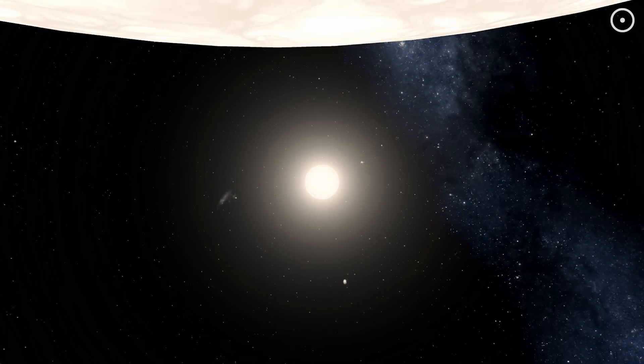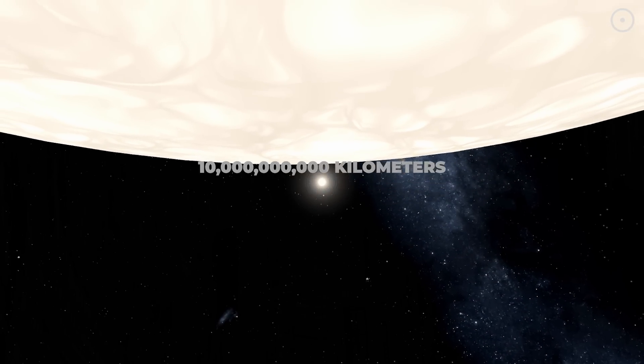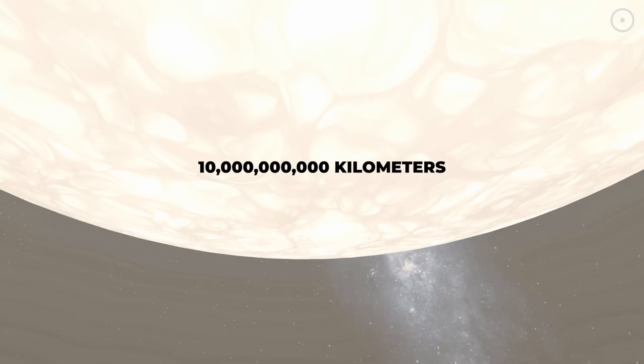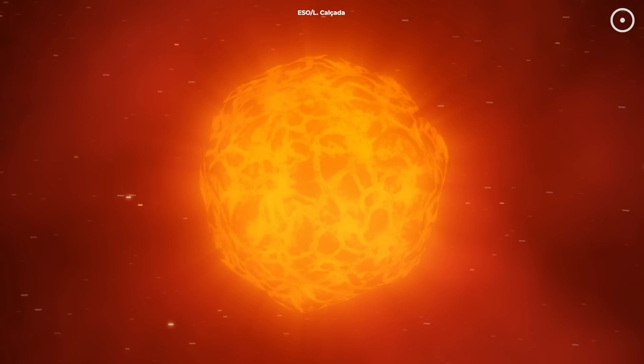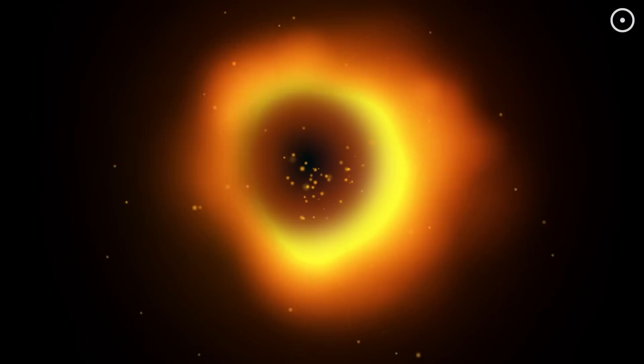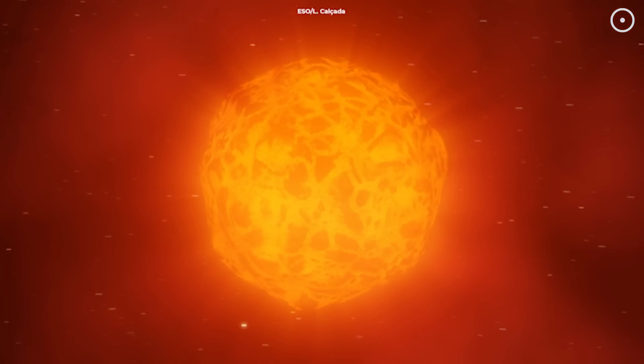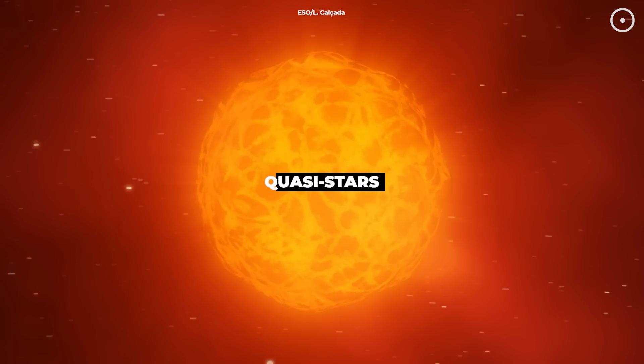Now imagine a star with a radius up to 10 billion kilometers, over 14,000 times the size of our Sun. This star is so large and powerful that it holds a black hole within it. Scientists call these quasi-stars.